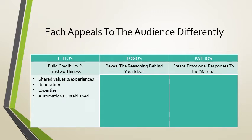We look to ethos when somebody using rhetoric is expressing shared values or experiences, when that person is relying on their reputation, when they're relying on expertise — whether that's their own expertise or drawing on the expertise of others. There's also a difference between automatic ethos and established ethos. Automatic ethos is something you just have — the president of the United States has automatic ethos because he's the president, and your teachers and parents have automatic ethos over you. Whereas other people need to establish their ethos by showing expertise, building their reputation, and demonstrating shared values or experiences before they are credible or trustworthy to you.